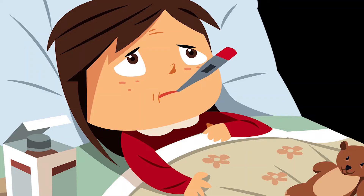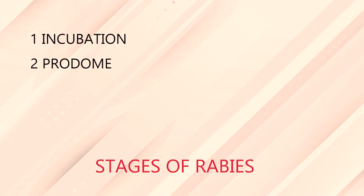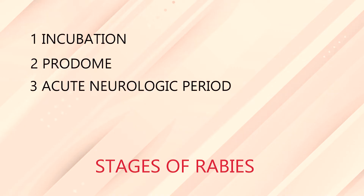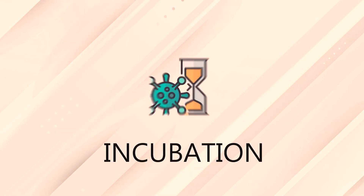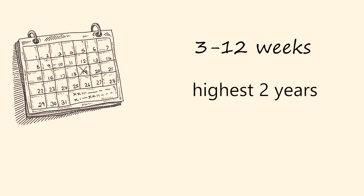Rabies has five distinct stages: incubation, prodrome, acute neurologic period, coma, and death. Incubation is the time before any symptoms appear. It takes around 3 to 12 weeks, but can last as long as 2 years or as little as 5 days.